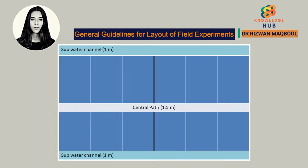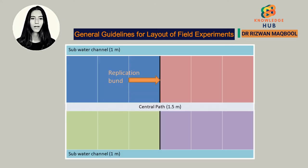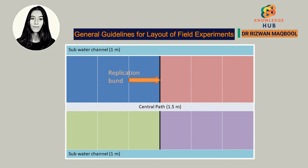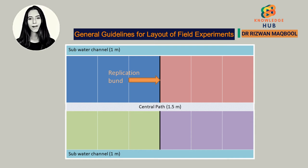2. There should be two sub-water channels having a width of 1 meter and should run along the length of the field. 3. The replication bund should be from 0.6 to 0.75 meter depending upon soil type — for clayey soil 0.6 meter and for sandy soil 0.75 meter.